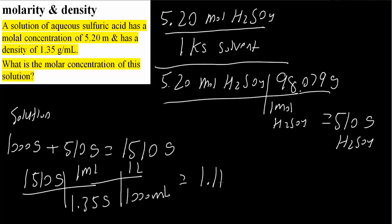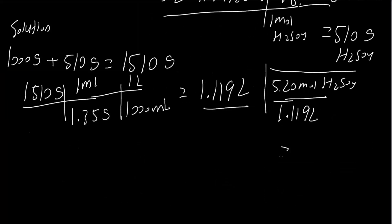Finally we want to determine molarity which is moles of the solute divided by liter of solution. So what we would have now is 5.20 moles of H2SO4 divided by the liter of solution which was 1.119 liter, and this would give us 4.65 molarity, moles over liter. And that's all we need to do for this problem.